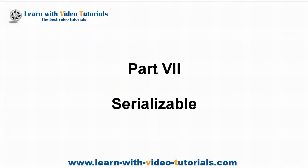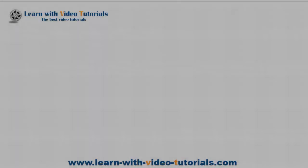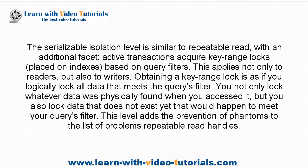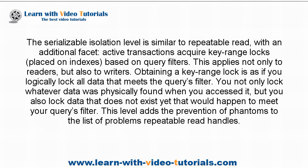Part 7: Serializable. The Serializable isolation level is similar to Repeatable Read, with an additional facet. Active transactions acquire key range locks placed on indexes based on query filters. This applies not only to readers but also to writers. Obtaining a key range lock is as if you logically lock all data that meets the query's filter — you not only lock whatever data was physically found, but you also lock data that does not exist yet that would meet your query's filter. This level adds the prevention of phantoms to the problems that Repeatable Read handles.